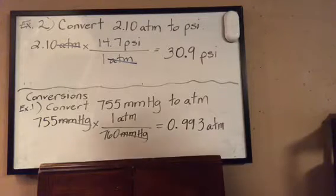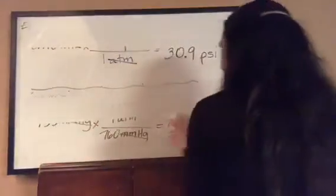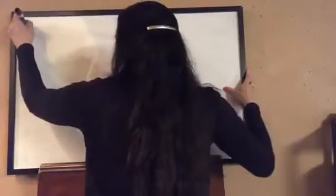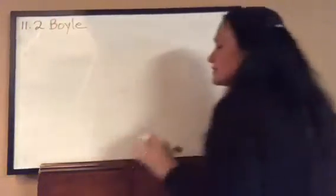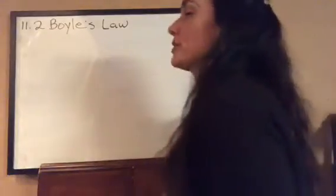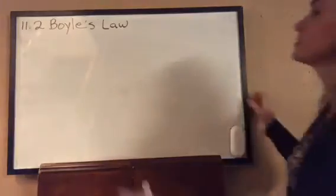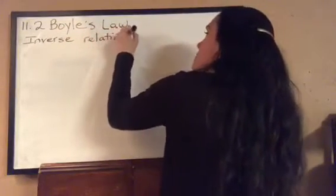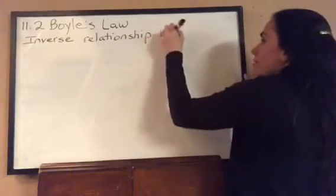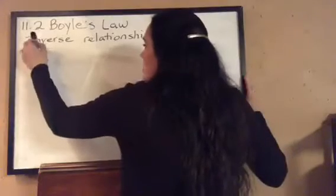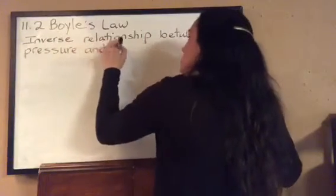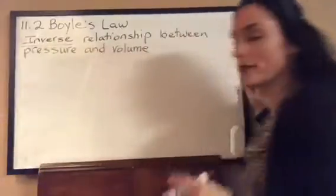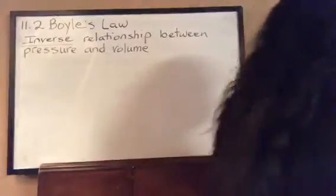The first gas law we're going to talk about is Boyle's Law — Section 11.2. Boyle's Law explains the relationship between the pressure and volume of a gas. It's named after the English scientist Robert Boyle, who did experimentation with gases. Boyle's Law describes an inverse relationship between pressure and volume: one goes up, the other goes down.